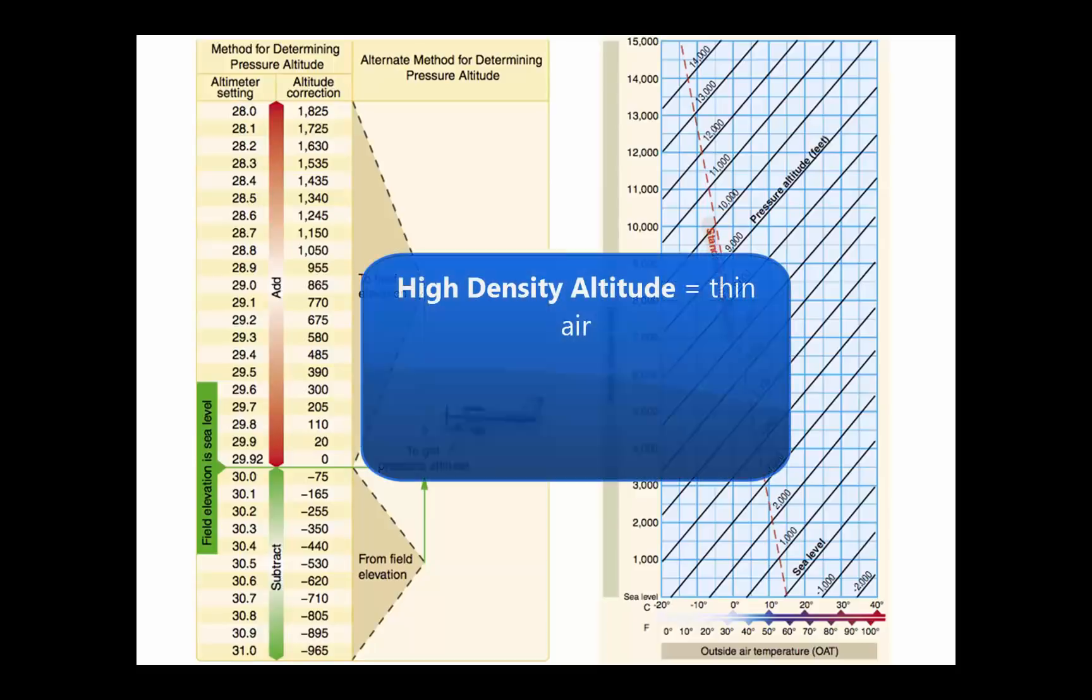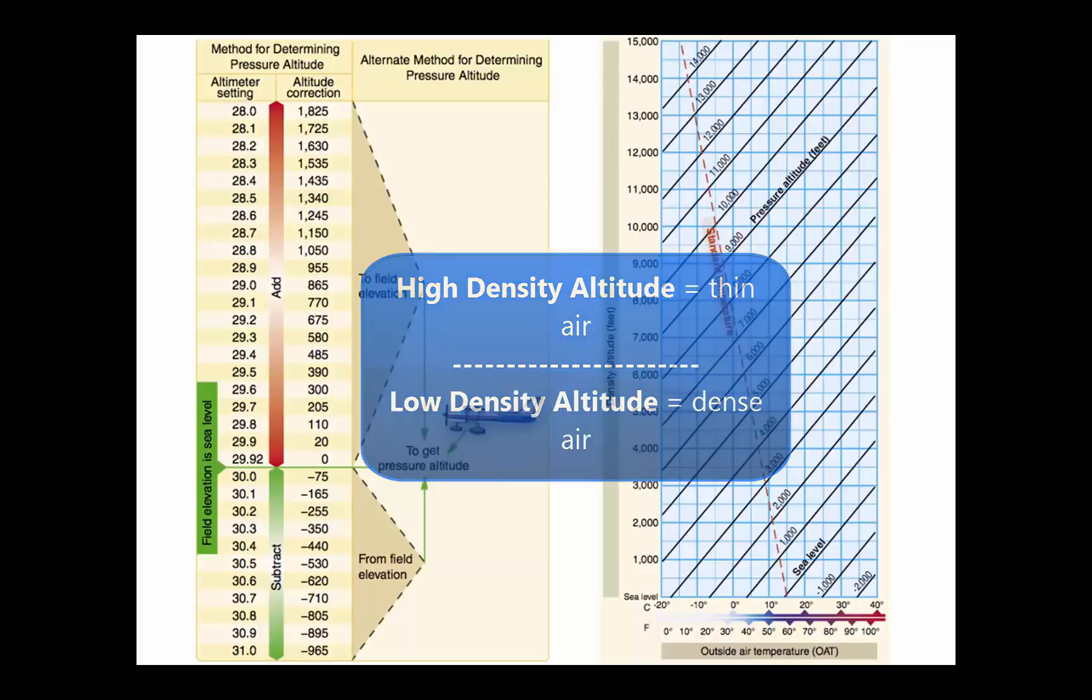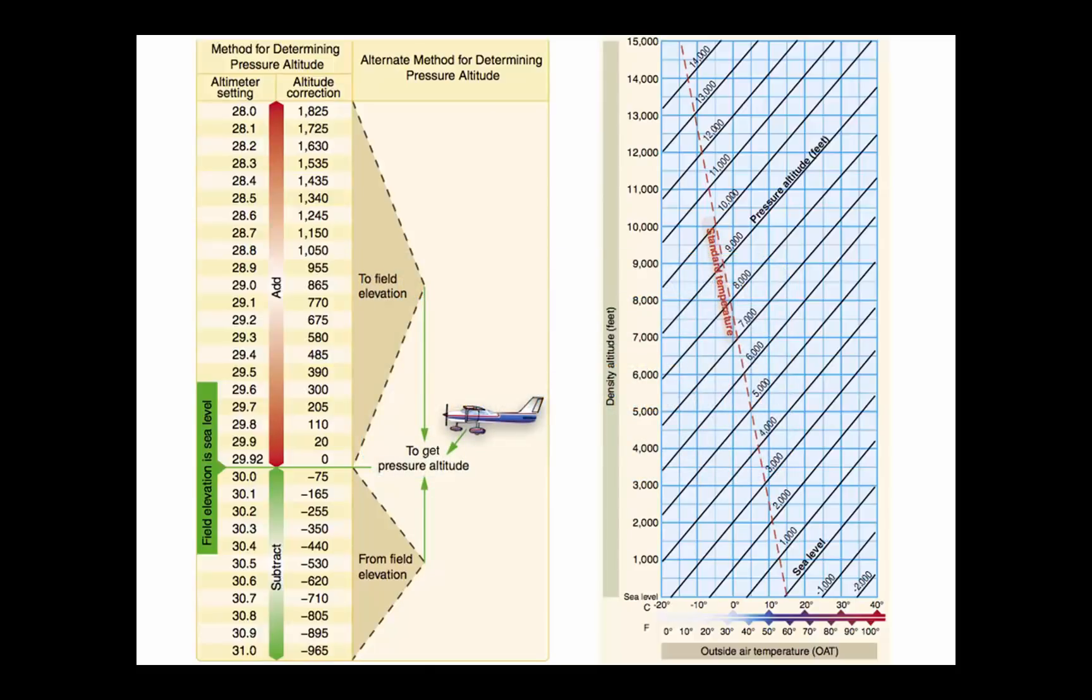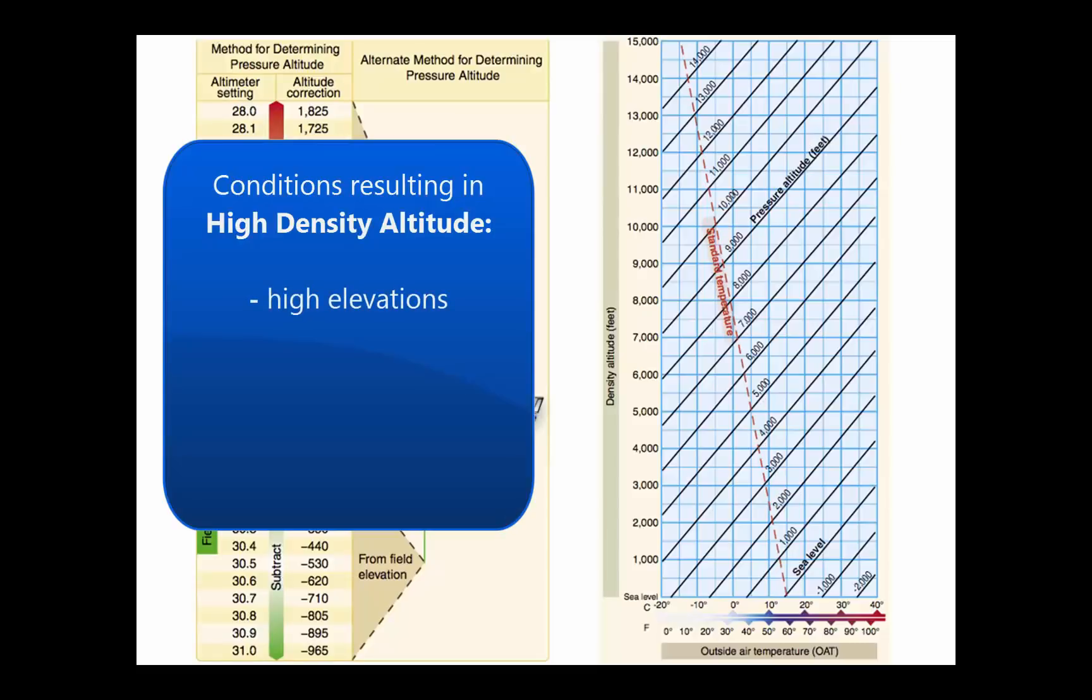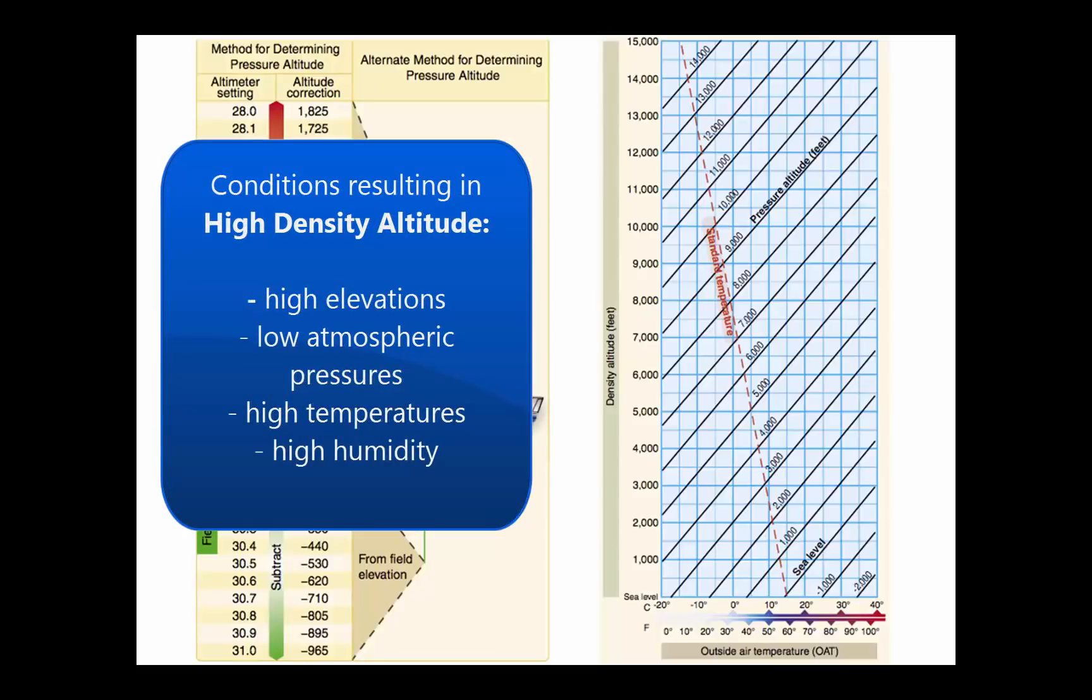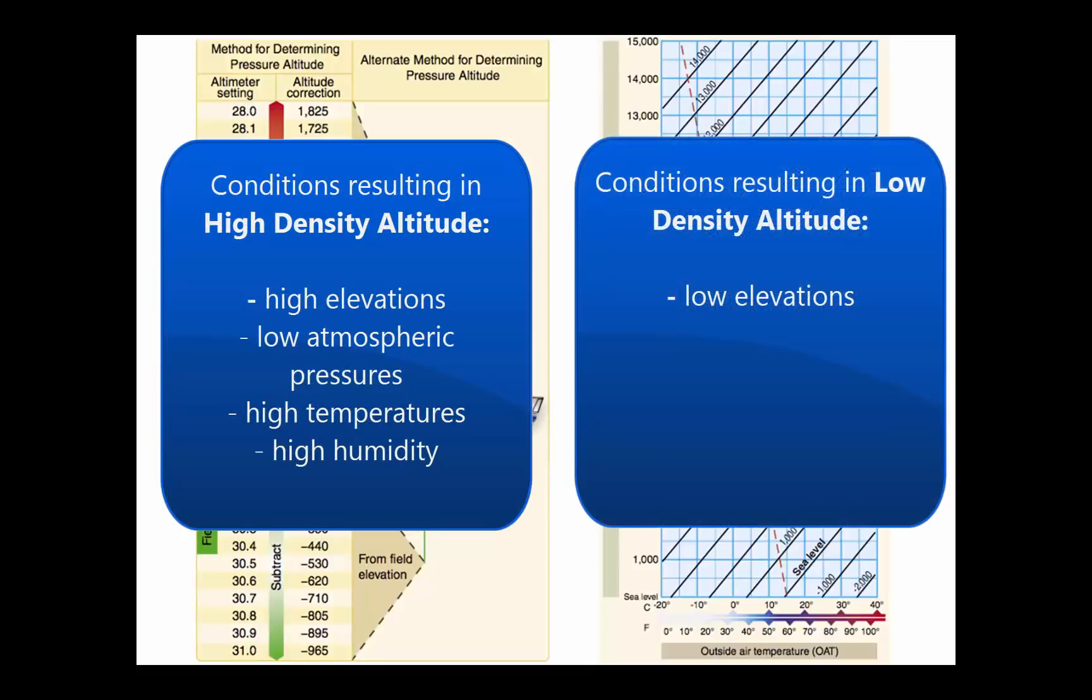High density altitude refers to thin air while low density altitude refers to dense air. The conditions that result in a high density altitude are high elevations, low atmospheric pressures, high temperatures, high humidity, or some combination of these factors. Lower elevations, high atmospheric pressure, low temperatures, and low humidity are more indicative of low density altitude.